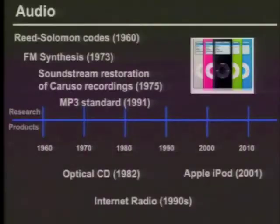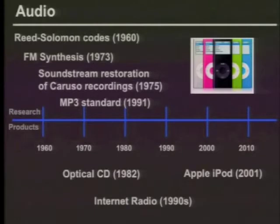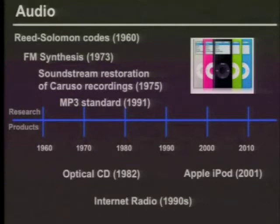The next big one was audio. There's obviously a huge amount of research on digital signal processing that led up to this. CDs use a technique called Reed-Solomon codes for error correction — a fairly old technique developed in the 60s. An example of a really brilliant innovation was a company called Soundstream, which spun out of the University of Utah. Tom Stockham founded it, and he restored old Caruso analog recordings and showed you could play them back and remaster them digitally.